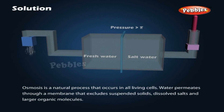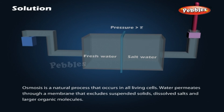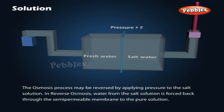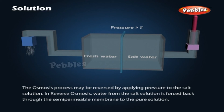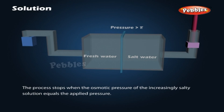Reverse osmosis and water purification: Osmosis is a natural process that occurs in all living cells. Water permeates through a membrane that excludes suspended solids, dissolved salts, and larger organic molecules. The osmosis process may be reversed by applying pressure to the salt solution. In reverse osmosis, water from the salt solution is forced back through the semi-permeable membrane to the pure solution. The process stops when the osmotic pressure of the increasingly salty solution equals the applied pressure.